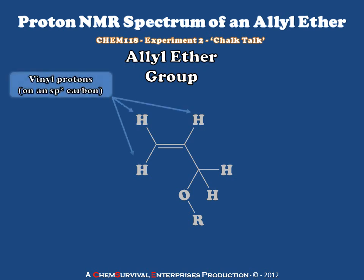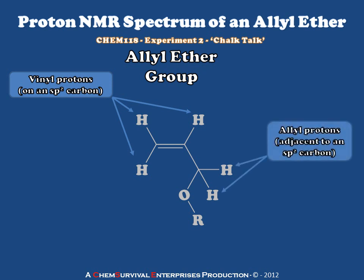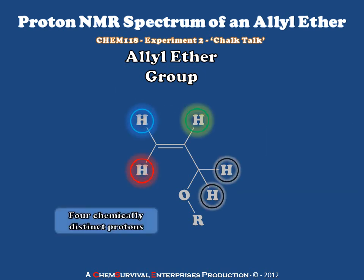The allyl ether group contains two general classes of protons. First are the vinyl protons — these are protons attached directly to an sp2 carbon. The second class are allyl protons. We use this term to refer to protons which are adjacent to an sp2 carbon, but are themselves attached to an sp3 carbon. The allyl ether group results in four chemically distinct protons on this particular side of the ether bond. We have three different vinyl protons, which results from the lack of free rotation about the pi bond.